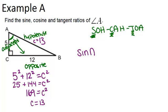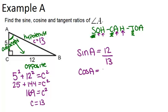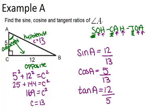Now we can figure out sine, cosine, and tangent. The sine of angle A — remember sine is opposite over hypotenuse — so opposite is 12 and hypotenuse is 13, giving sine of angle A as 12 over 13. Cosine of angle A is adjacent over hypotenuse, so that's 5 over 13. And tangent of angle A is opposite over adjacent, so that's 12 over 5.